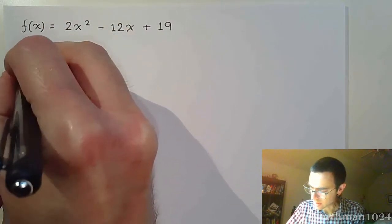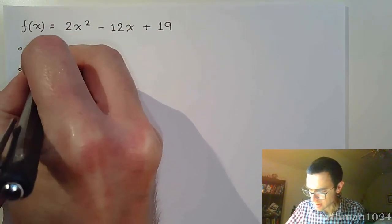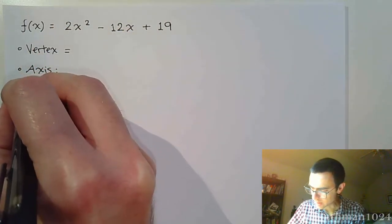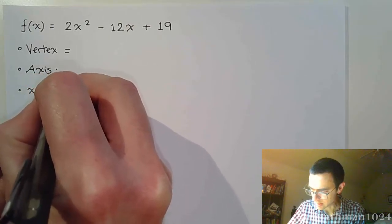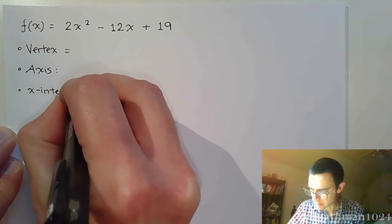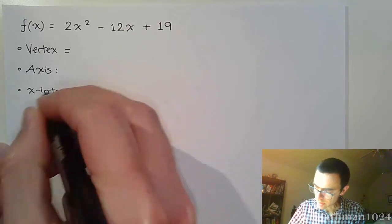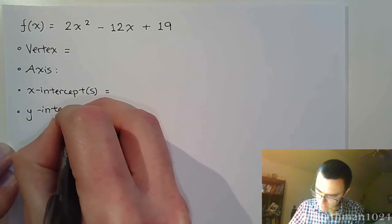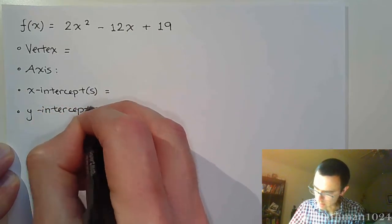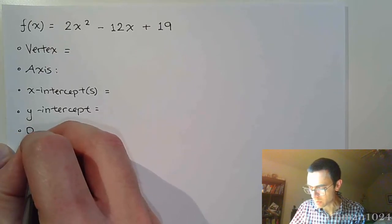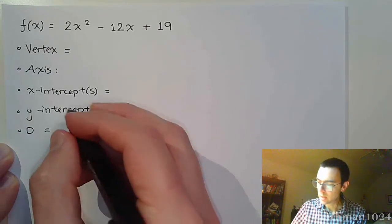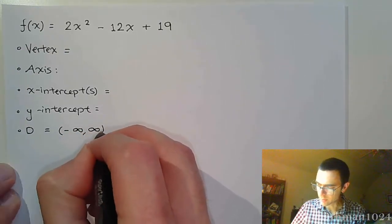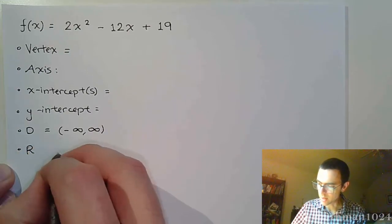Let's find the vertex. Let's find the axis of symmetry. Let's find any x-intercepts. Let's find the y-intercept, which we know we have because of the domain, which we already know. That's negative infinity to infinity, and then we want to find the range.